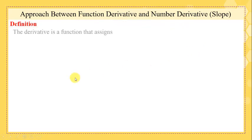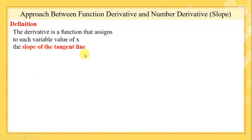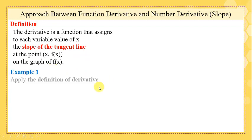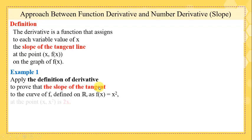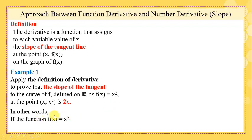Derivative definition: the derivative is a function that assigns to each value of x the slope of the tangent line at point (x, f(x)) on the graph of f(x). Example: we want to apply the definition of derivative to prove that the slope of the tangent to the curve f(x) = x² at point x is 2x.